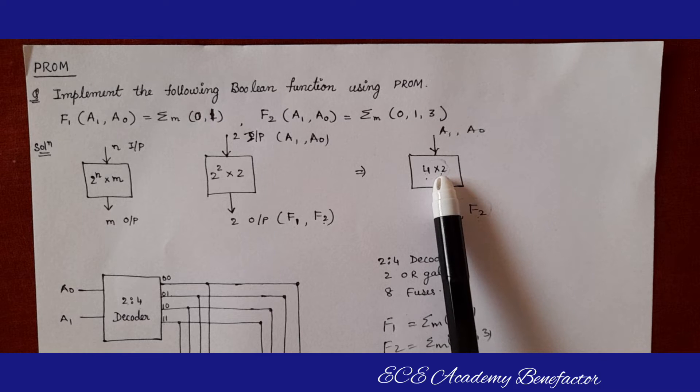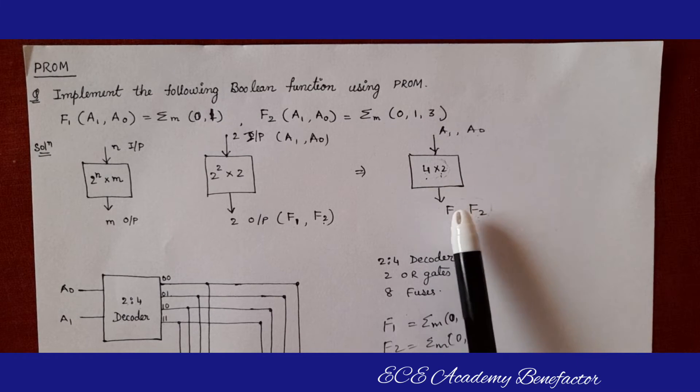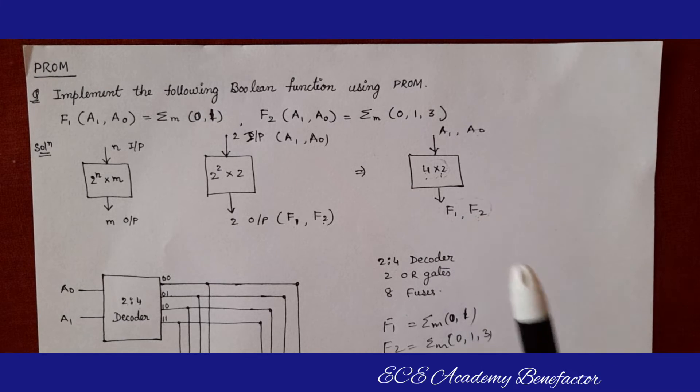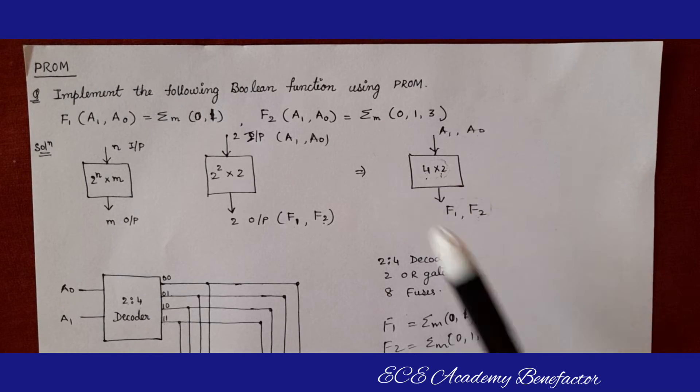For implementing a PROM we need a decoder and OR gates and fuses. Based on this we can decide the decoder. The decoder required is 2 is to 4 decoder and 2 OR gates for f1 and f2, and total 8 fuses will be required, 4 into 2 is 8 fuses.